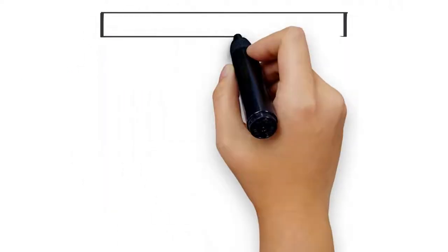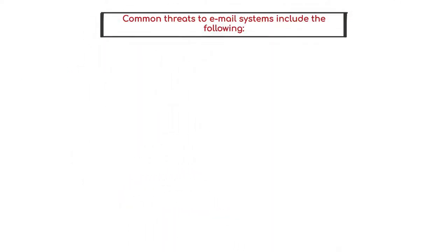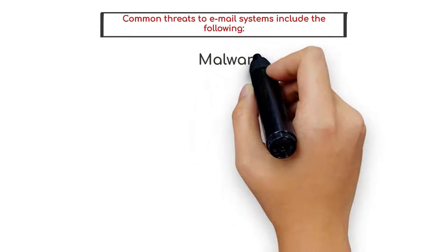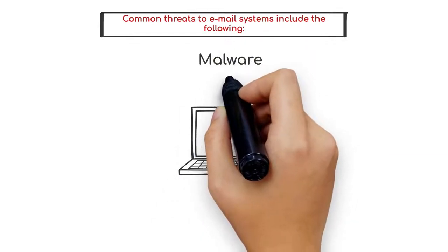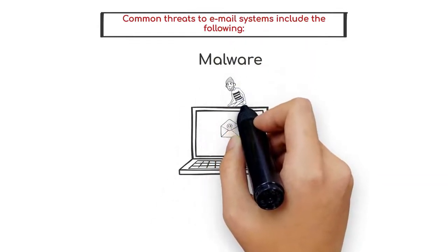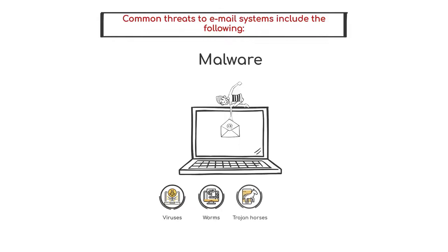Common threats to email systems include the following. Increasingly, attackers are taking advantage of email to deliver a variety of attacks to organizations through the use of malware, or malicious software, that includes viruses, worms, Trojan horses, and spyware.